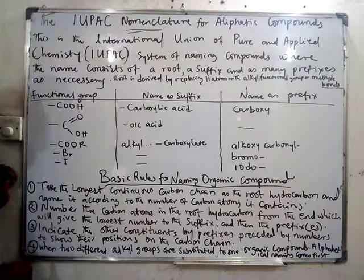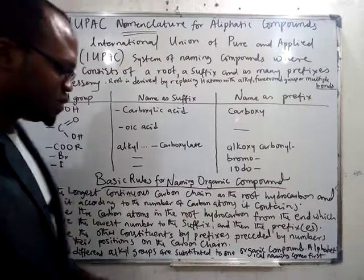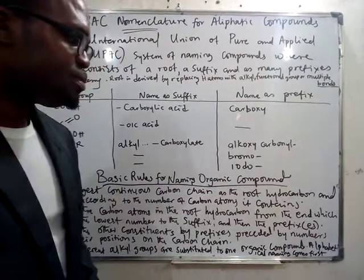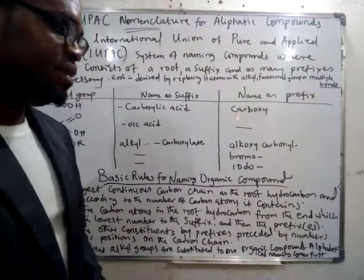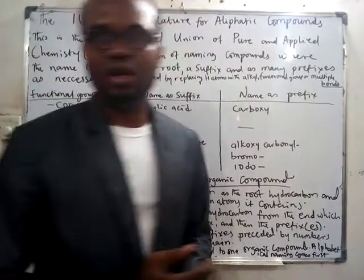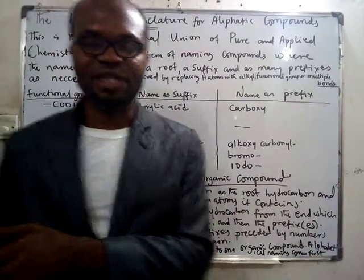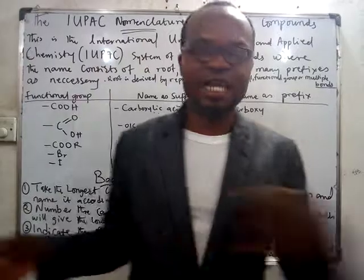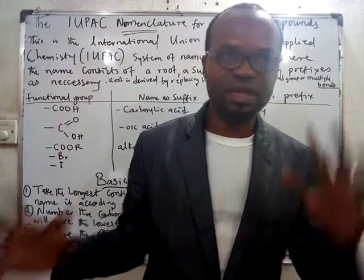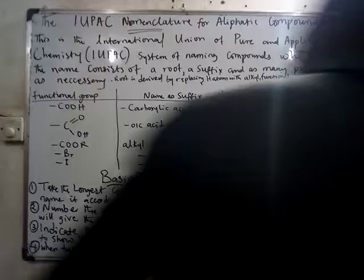And finally, number four: when two different alkyl groups are substituted to one organic compound, you have to name them alphabetically — like if you have one starting with E and one with M, the one with E will come first when there is more than one. So we are going to demonstrate these rules now.